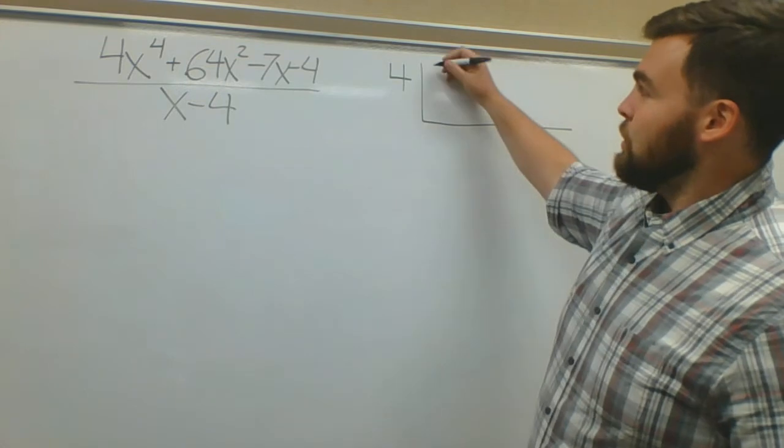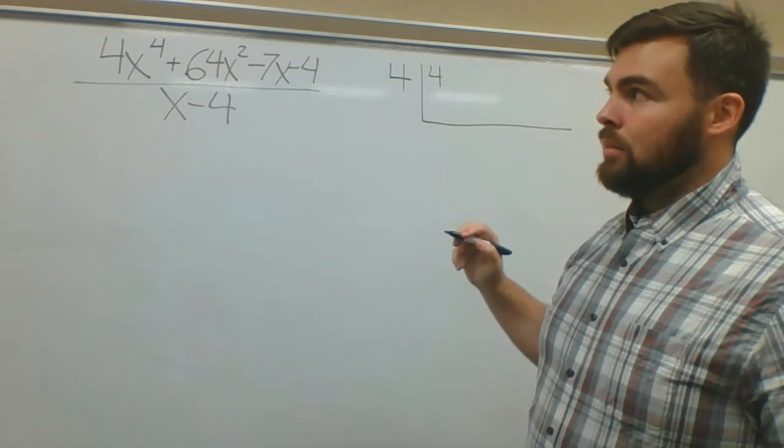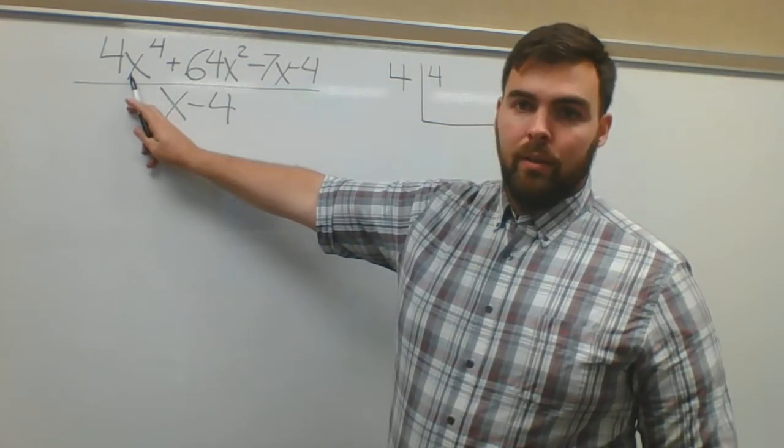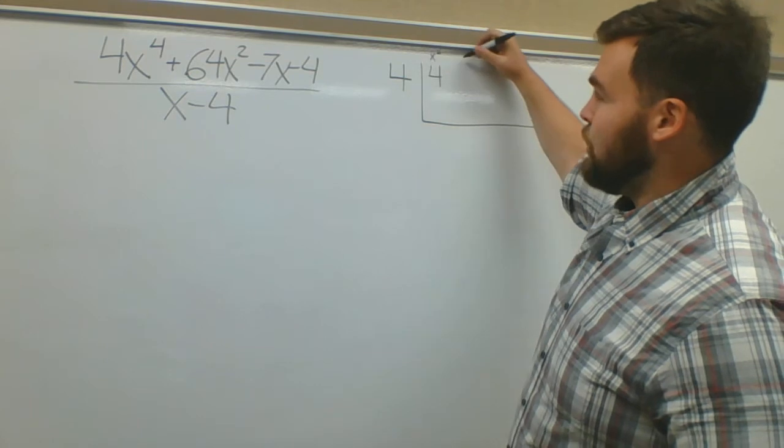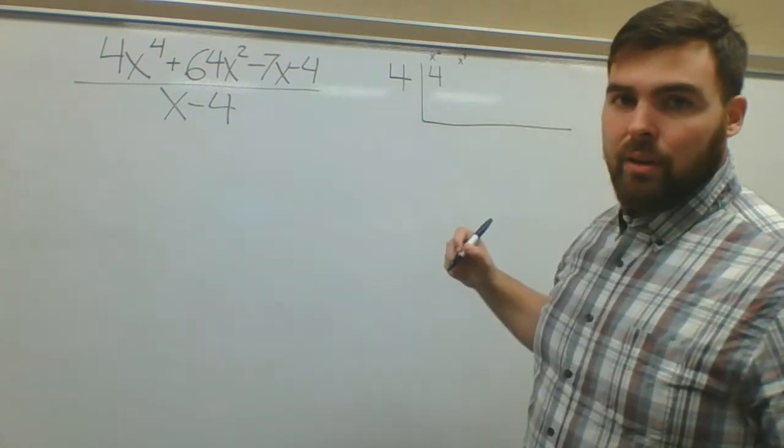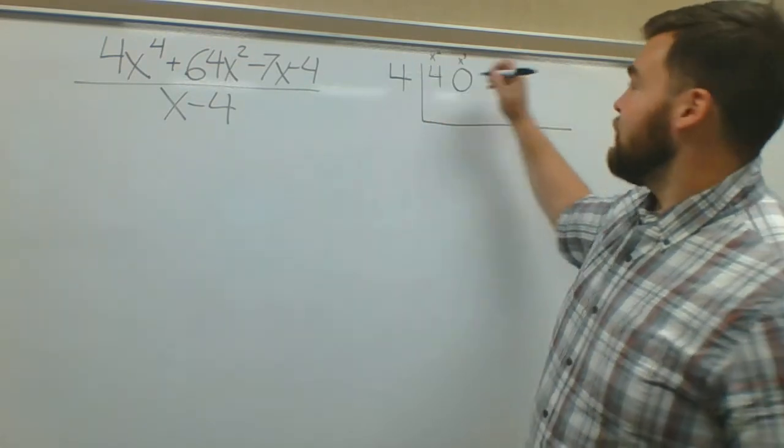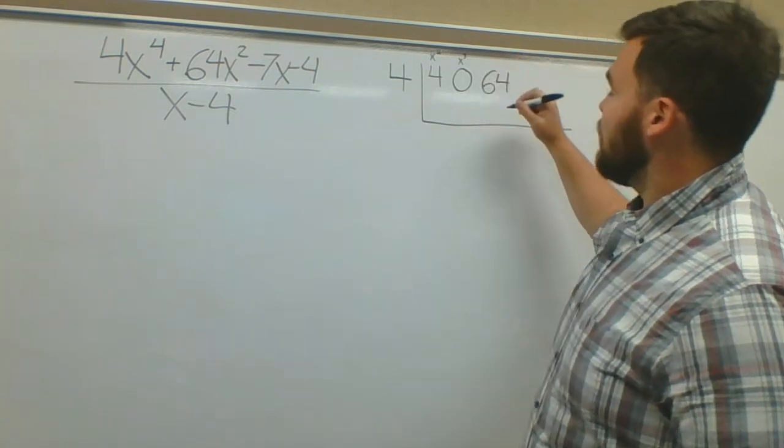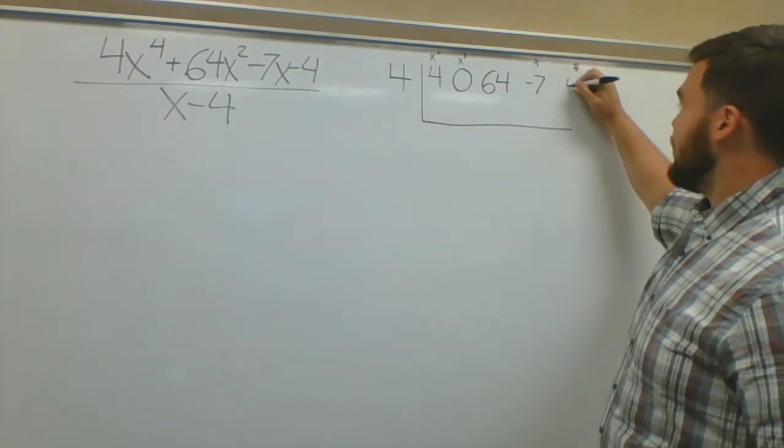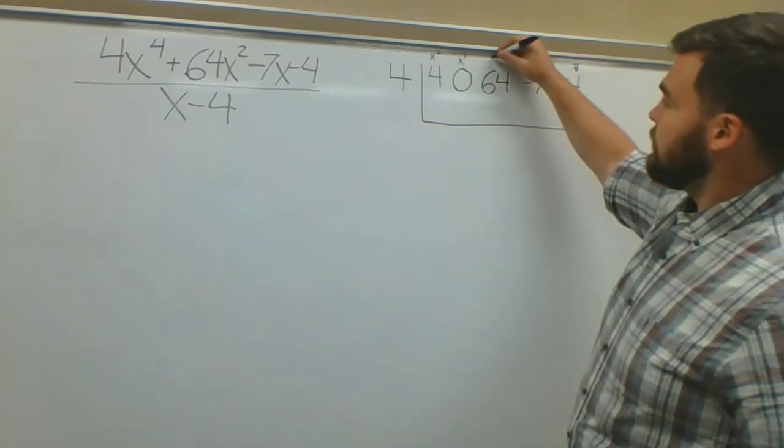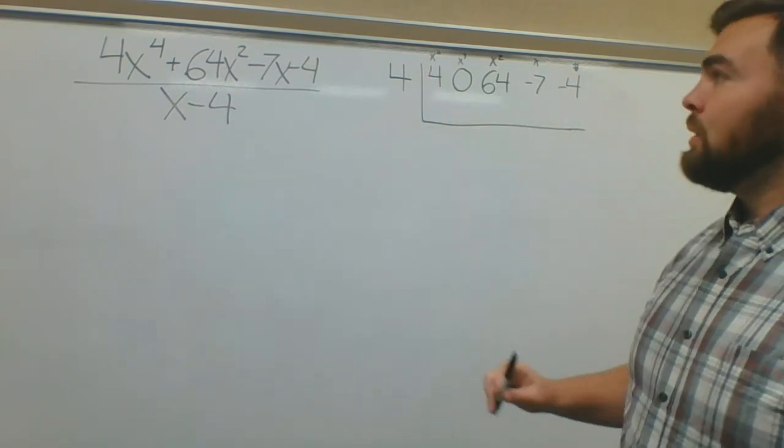My first number is going to be 4. My next number is not going to be 64, because pay attention: x to the fourth, where's my x to the third term? I don't have one, right? If you're writing these out up here, which you can do, that's fine. There's no x to the third, so I have to remember that there's zero there. Now x squared, x squared is 64. X to the first is negative 7, and my constant term is negative 4.